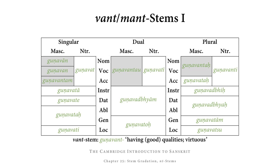As for the neuter forms: in the singular nominative, vocative, accusative, we have gunavat — the weak stem without any endings. In the dual, we have gunavati, which is the weak stem plus the ending e that we already know from other consonant stems in the neuter dual. The neuter plural nominative, vocative, accusative has gunavanti, which for all intents and purposes looks like a strong form — basically the nasal is added before the stem-final t, as we've also seen in manāṃsi, cakṣūṃṣi, jaganti, and so on.